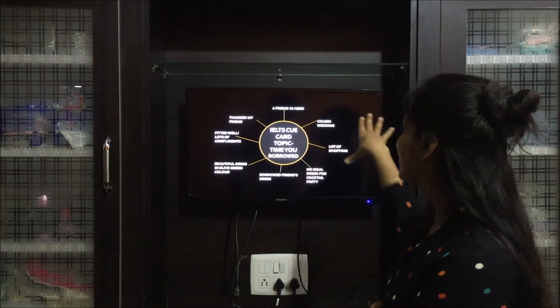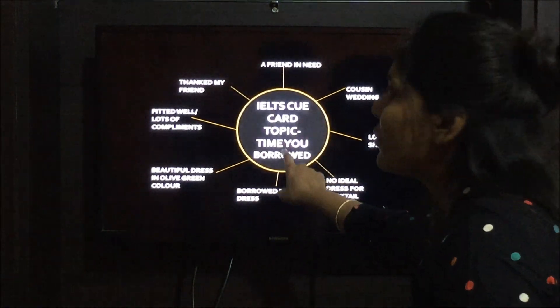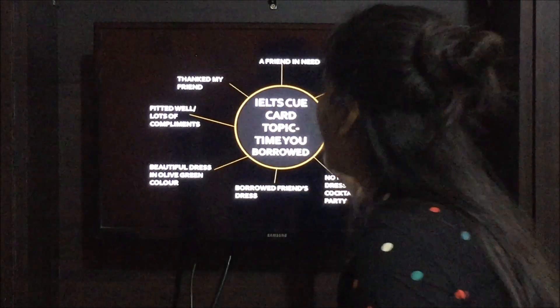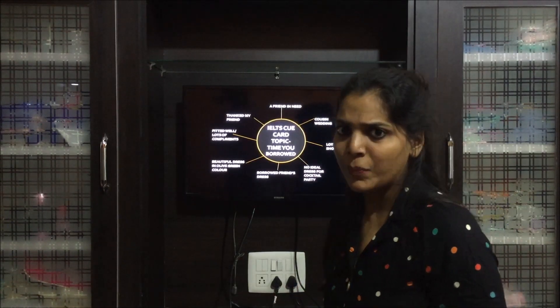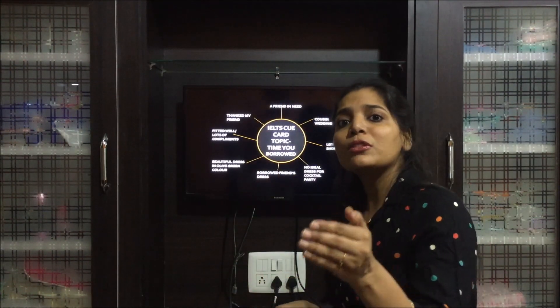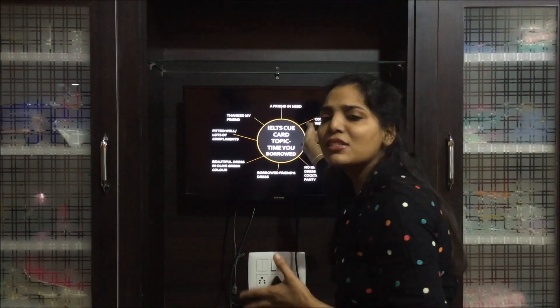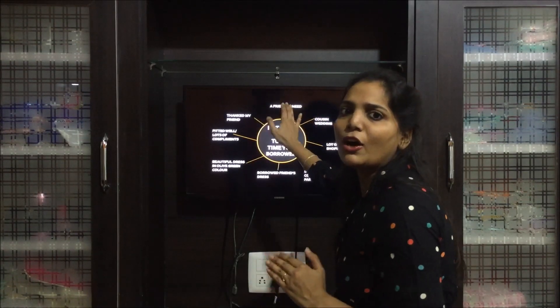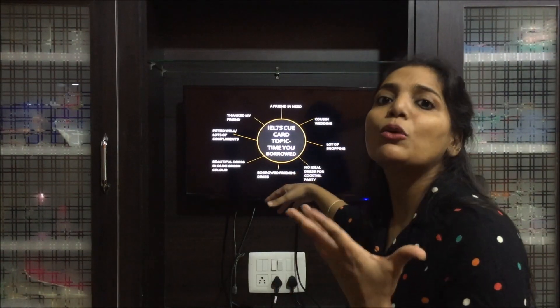If you want to pen down points, you can see how I have jotted them down. In the center I have written the cue card topic — just for reference, you need not write this. You can simply write 'time you borrowed' as a hint, or just make a circle. There were four pointers given, which are the cues to prepare. You can also try to quote a quotation — for example, for a topic about borrowing from a friend, I thought of: 'a friend in need is a friend indeed.' I just wrote it in three to four words.